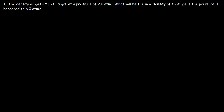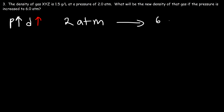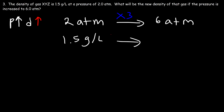Let's work on this problem. The density of gas XYZ is 1.5 grams per liter at a pressure of 2 atm. What will be the new density of that gas if the pressure is increased to 6 atm? So if we increase the pressure, the density will increase. If you double the pressure, the density will double; if you triple the pressure, the density will triple. The pressure increases from 2 atm to 6 atm, which means it increased by a factor of 3. So the new density should be 1.5 times 3, which is 4.5 grams per liter.